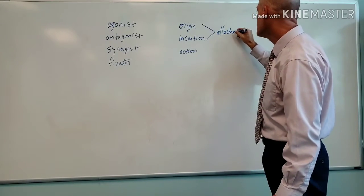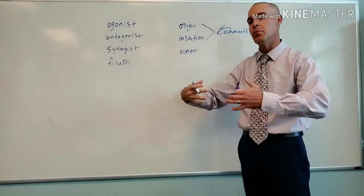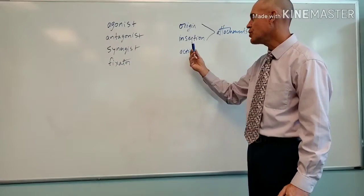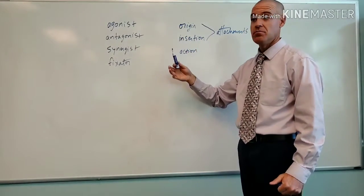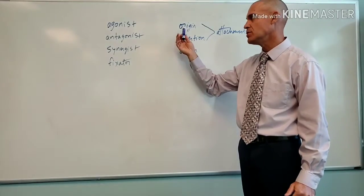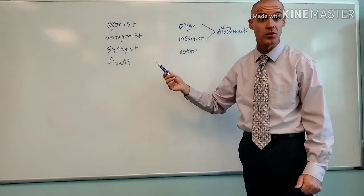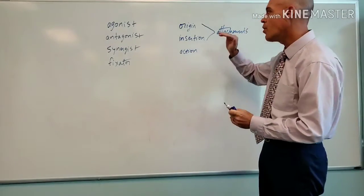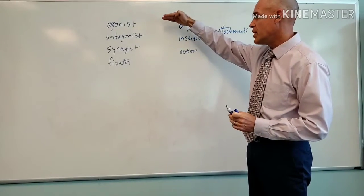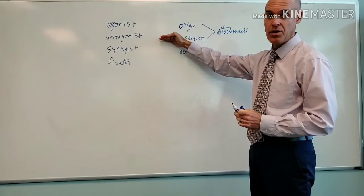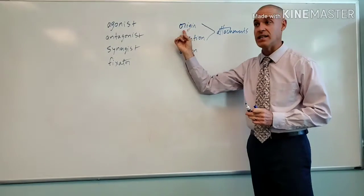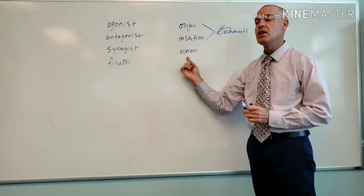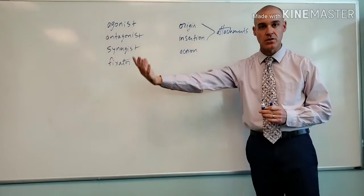Keep in mind that sometimes with a muscle there can be multiple bones involved, multiple attachments. You could have one origin, or sometimes two. You can even have three origins and one insertion. But to simplify: a muscle is going to have an attachment on one end and another attachment on the other end. The origin is the less movable, and insertion is the more movable. The action is always going to be the function of the muscle — the movement the muscle carries out.